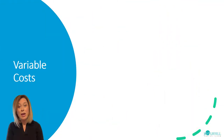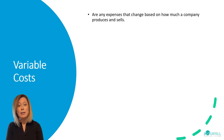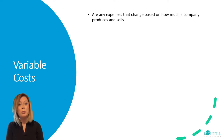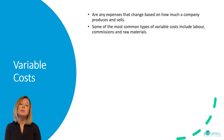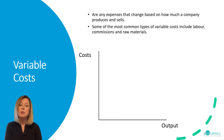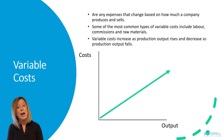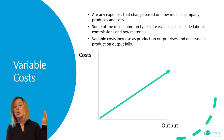Variable costs are any expense that changes as you produce more or sell. The main types are raw materials and labour. If we were to graph it, as output increases, so do total variable costs.